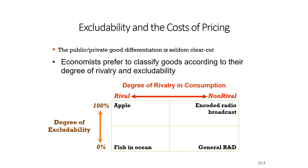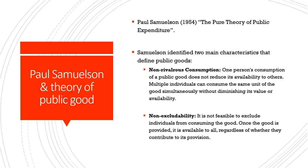Today we take this discussion forward by understanding who came up with the illustration of a public good and how we understand it in economics. Professor Paul Samuelson in a 1954 seminal paper titled 'The Pure Theory of Public Expenditure' came up with an explanation of how to represent a public good in economics. He identified the two main characteristics: non-rivalrous consumption and non-excludability.